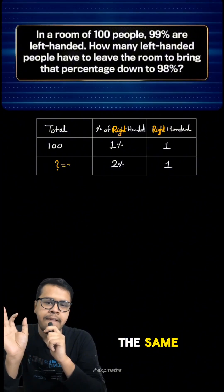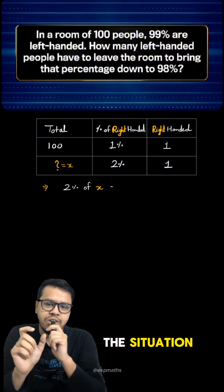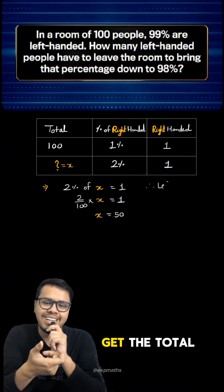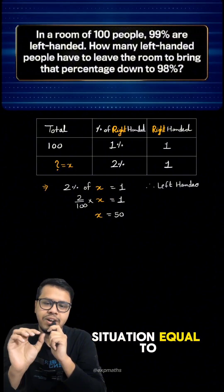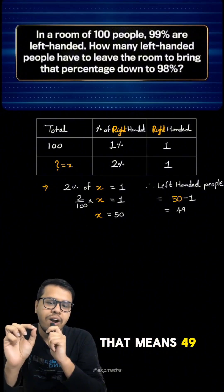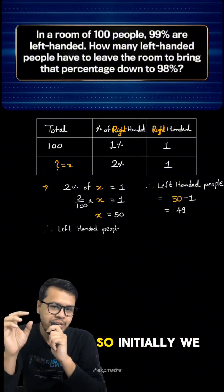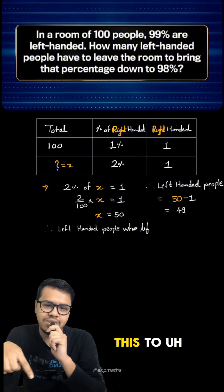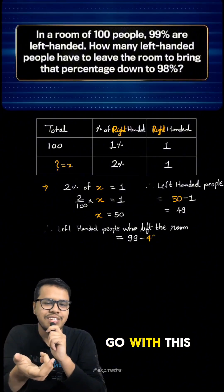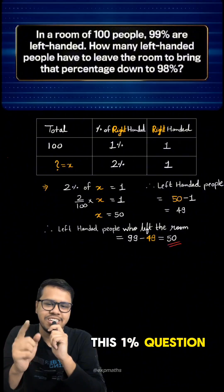Since the number of right-handed people stays the same, let's call the total number of people x. Two percent of x should equal one, so we solve for x to get the total number of people in the final situation equal to 50. That means 49 people are left-handed in the final situation. Initially we had 99 left-handed people, so the number who left is 99 minus 49, which equals 50. That's our answer — so now you know the answer to this one percent question.